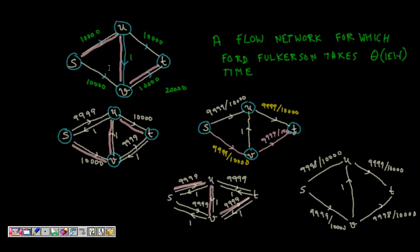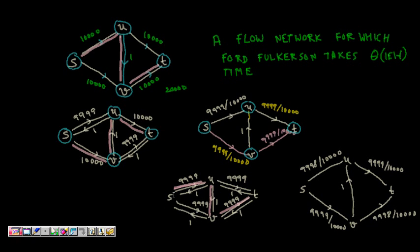But if you take augmenting path first as SUVT, so here if you go like this so the residual capacity of this path is 1, then what happens now if we take this path, so my residual graph is 9999 and on the opposite side it's 1. Then I have taken 1 here so in the opposite edge it's 1. Now 9999 here, 1 here. Now what happens we get another, if I take SVUT, now 1 here, 1 here, 1 here, so it now again becomes 9999 and 9999 here.